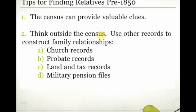Land and tax records are also really great. Tax records were recorded more frequently than the census, which is only every 10 years, so they help you track family movement between censuses. They also help you understand when sons came of age and started purchasing, inheriting, or being granted land, and whether they were paying tax on their property.